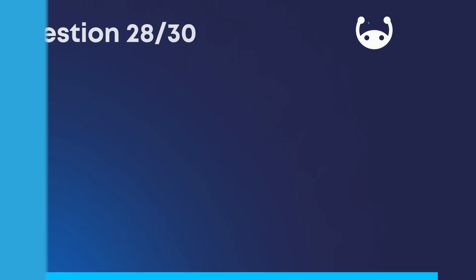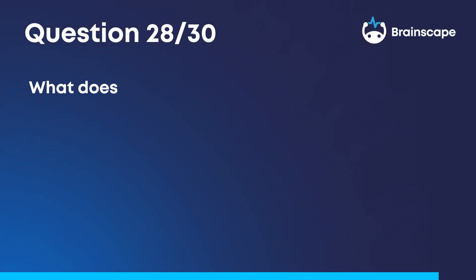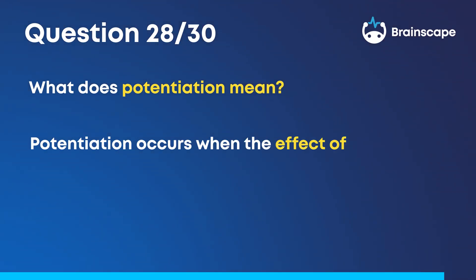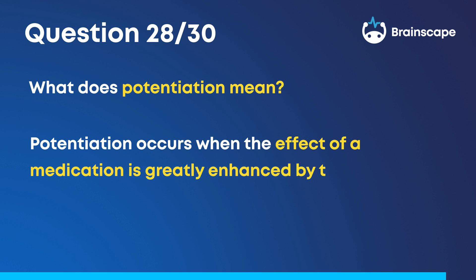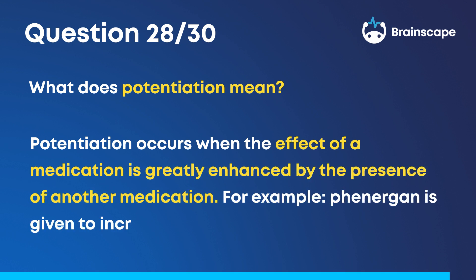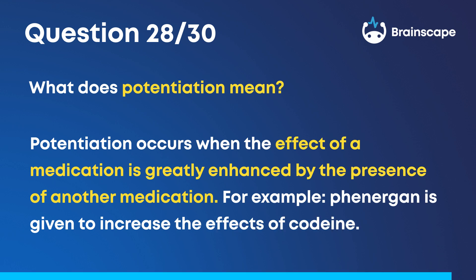Question 28. What does potentiation mean? Potentiation occurs when the effect of a medication is greatly enhanced by the presence of another medication. For example, Phenergan is given to increase the effects of codeine.